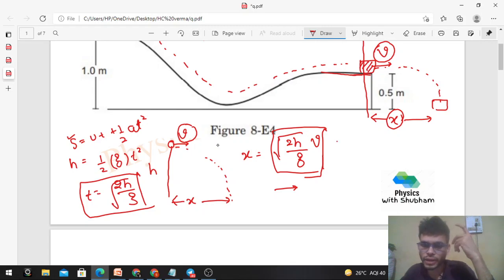The speed with which the particle will leave the track horizontally. Because h is given, it's 0.5. So we need to find v by using work energy theorem.